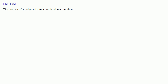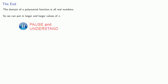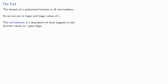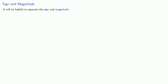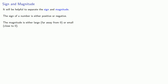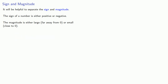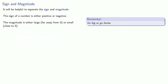The domain of a polynomial function is all real numbers, so we can put in larger and larger values of x. The end behavior is a description of what happens to the function values as x gets larger. It will be helpful to separate sign and magnitude. The sign of a number is either positive or negative, meanwhile the magnitude is either very large, far away from zero, or small, close to zero. A useful idea to keep in mind is: go big or go home.